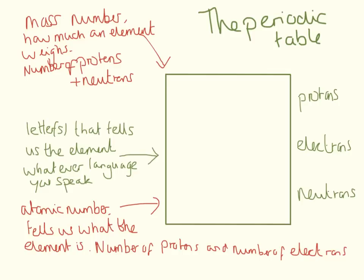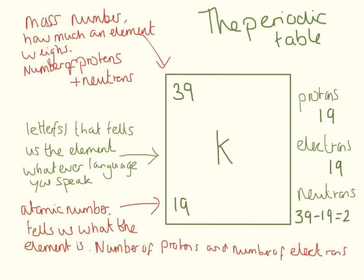One final example — potassium: the symbol is K, the mass number is 39, and the atomic number is 19. The atomic number equals the number of protons, so potassium has 19 protons and 19 electrons. The number of neutrons is the mass number minus the atomic number: 39 minus 19, so potassium has 20 neutrons.